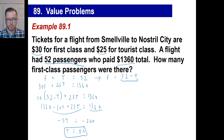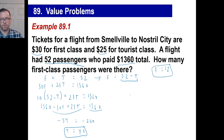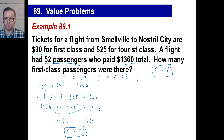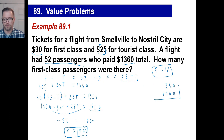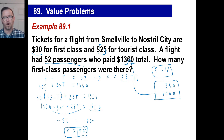So we have 40 tourist class passengers. That means we have 12 first class, since 40 and 12 give you 52. We can check: 12 times $30 is $360, and 40 times $25 is $1,000. Add those together and you get $1,360, which proves we're right.